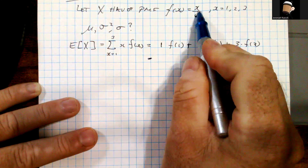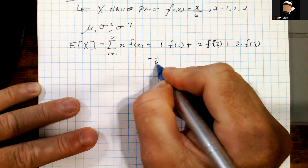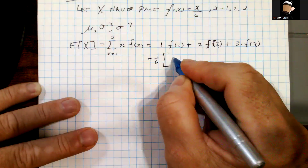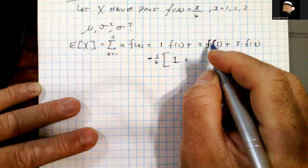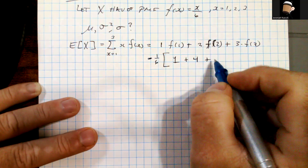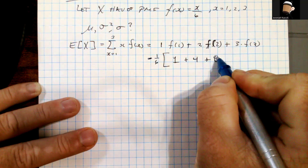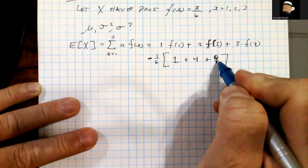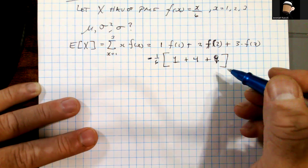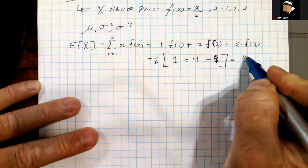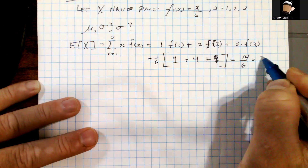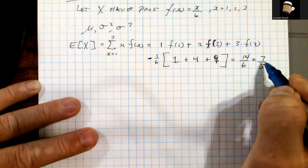Each f value has a 1/6 in common, so factoring that out: this is (1/6)·(1·1 + 2·2 + 3·3) = (1/6)·(1 + 4 + 9) = (1/6)·14 = 14/6, which reduces to 7/3. So μ = 7/3.